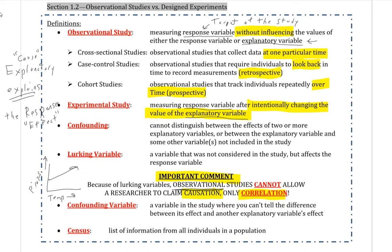Lurking variables is one type of confounding. Another type is confounding variables — a confounding variable is a variable in a study where you can't tell the difference between its effect and another effect. We also consider lurking variables, the ones we didn't even consider, as part of the topic of confounding.